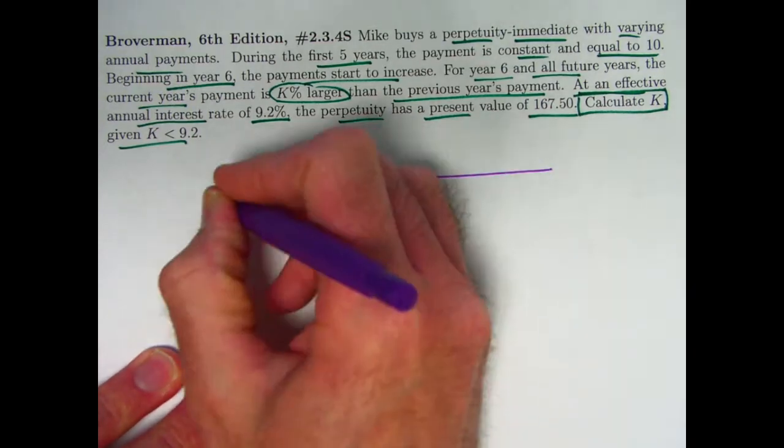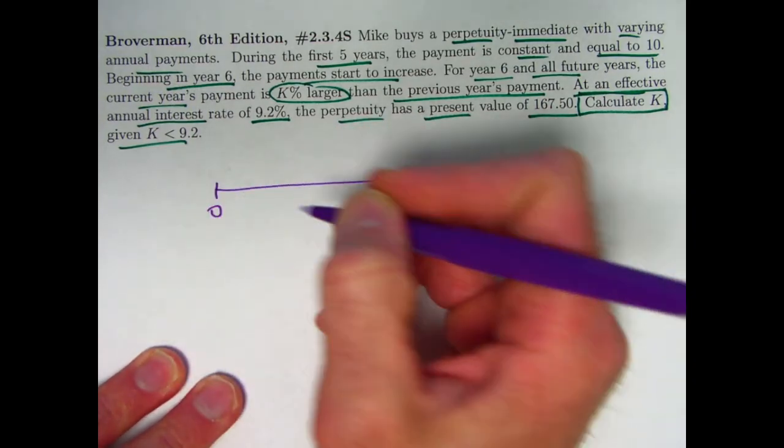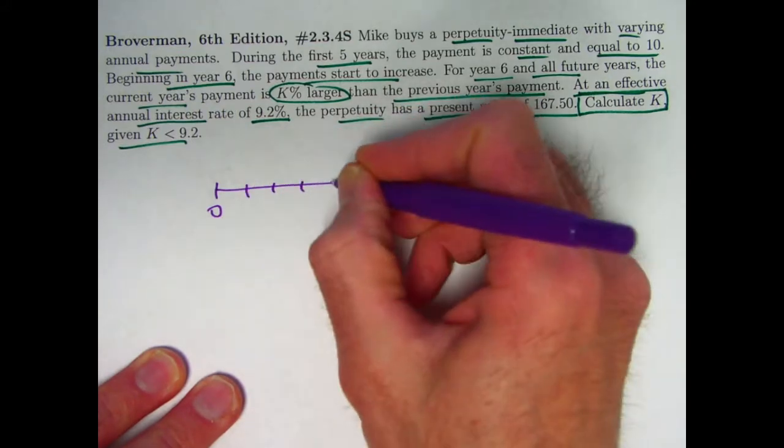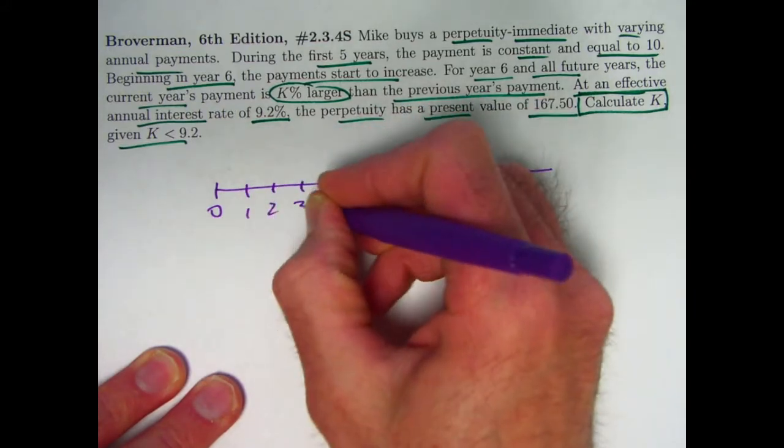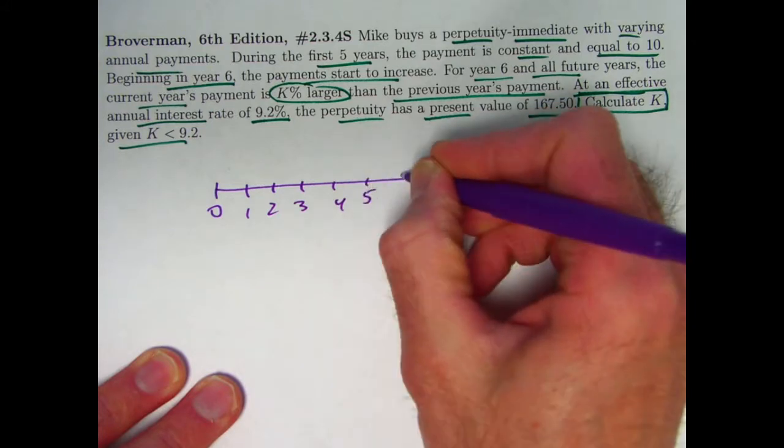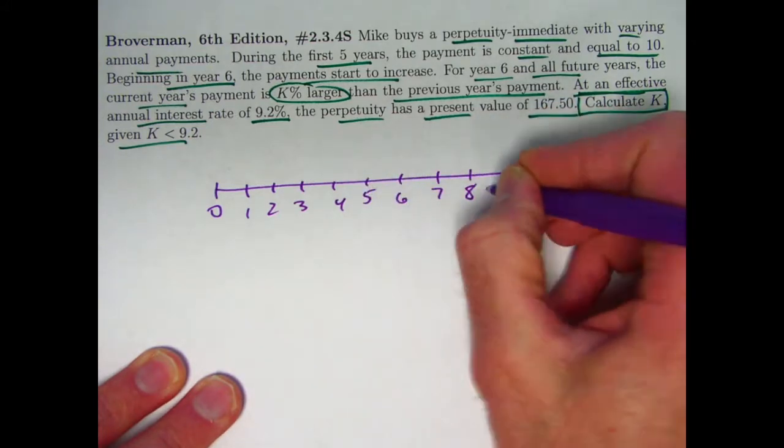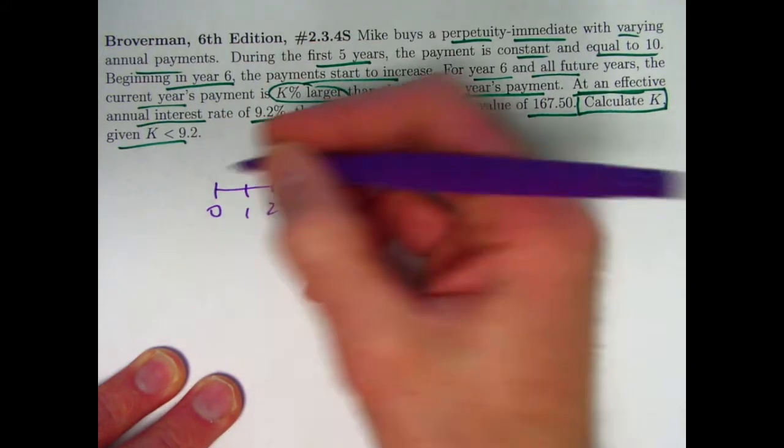Making our timeline, we're evaluating the present value of all these payments at time zero. We've got the payments in year 1, 2, 3, 4, 5, etc. It is a perpetuity. The payments do go on forever, in theory at least.